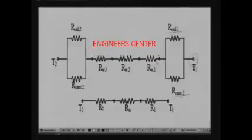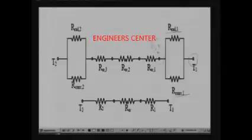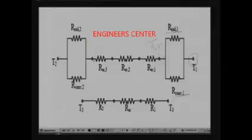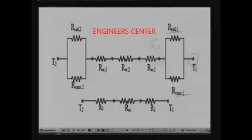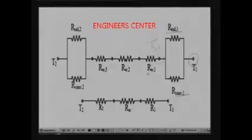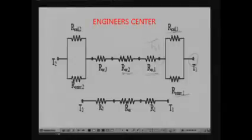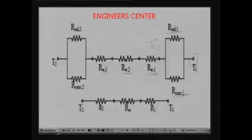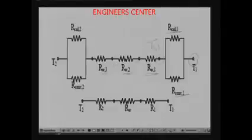This is the temperature of the surface of the wall inside the room, which is T1. From this point to this point, the heat transfer is taking place through the wall. You have three different layers: the conductive resistance of layer 1, conductive resistance of layer 2, and conductive resistance of layer 3. The mechanism is conduction and all the resistances are in series, so you have resistances in series here.